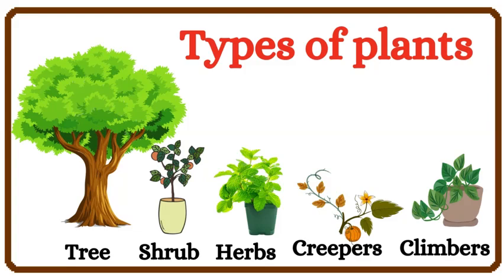The five types of plants are: Tree, Shrub, Herbs, Creepers, and Climbers.